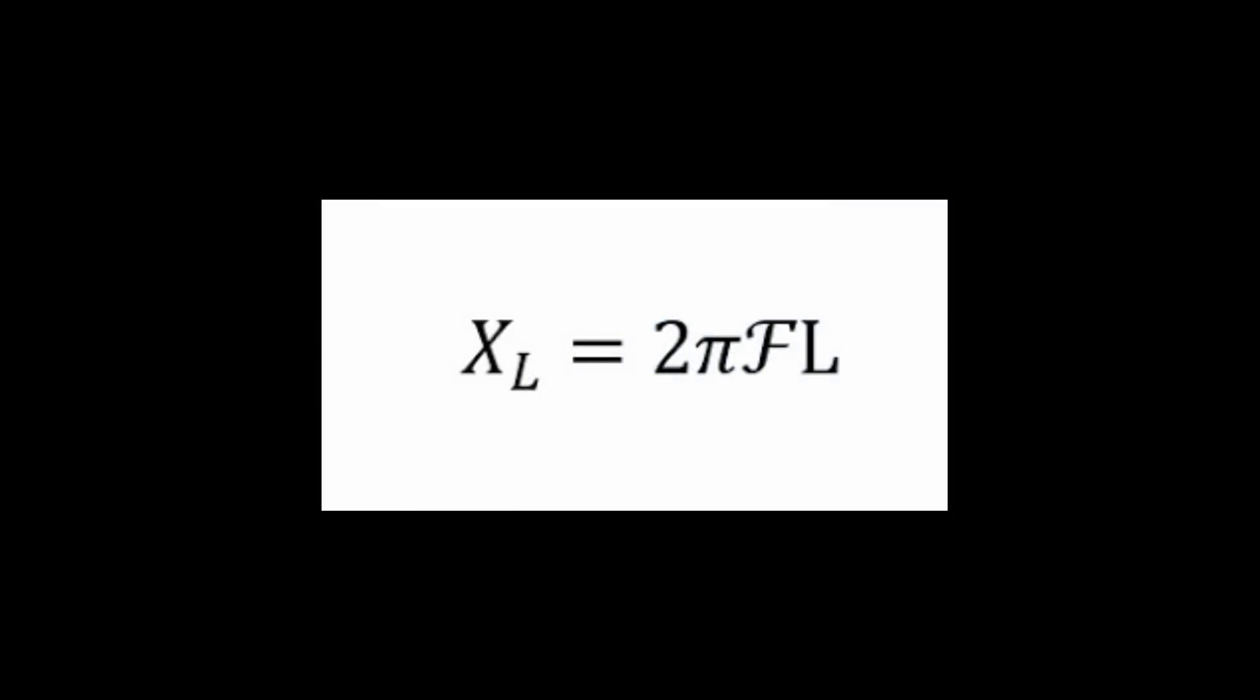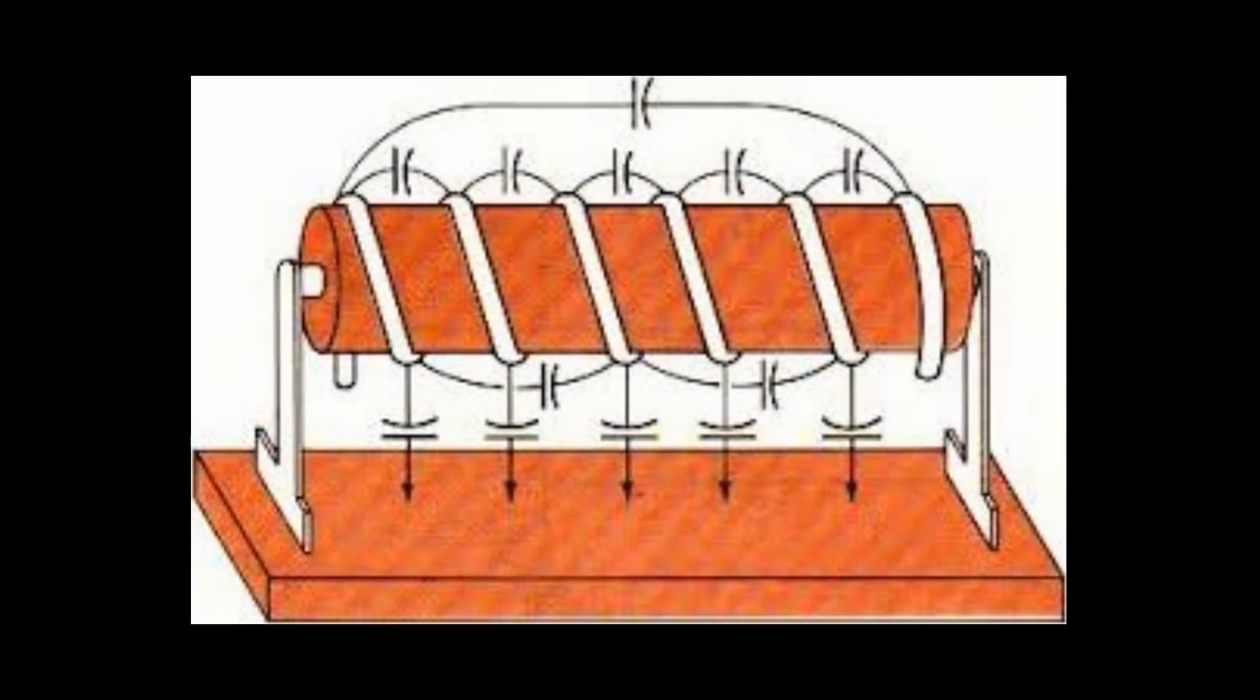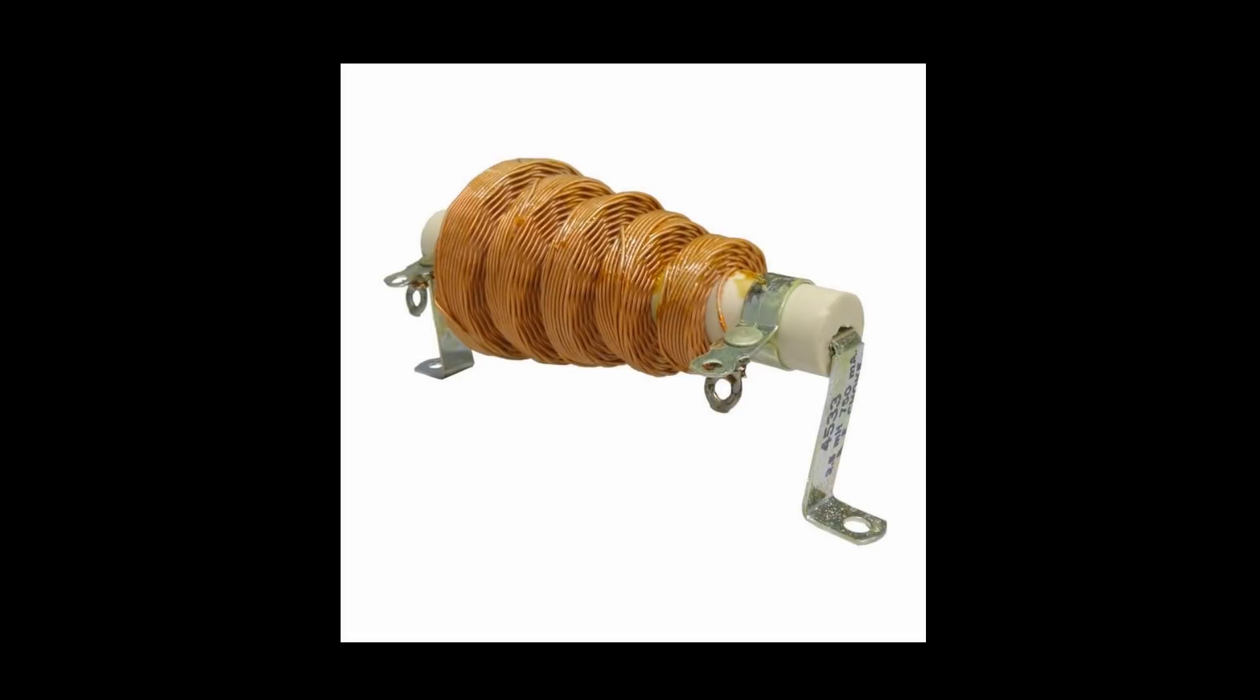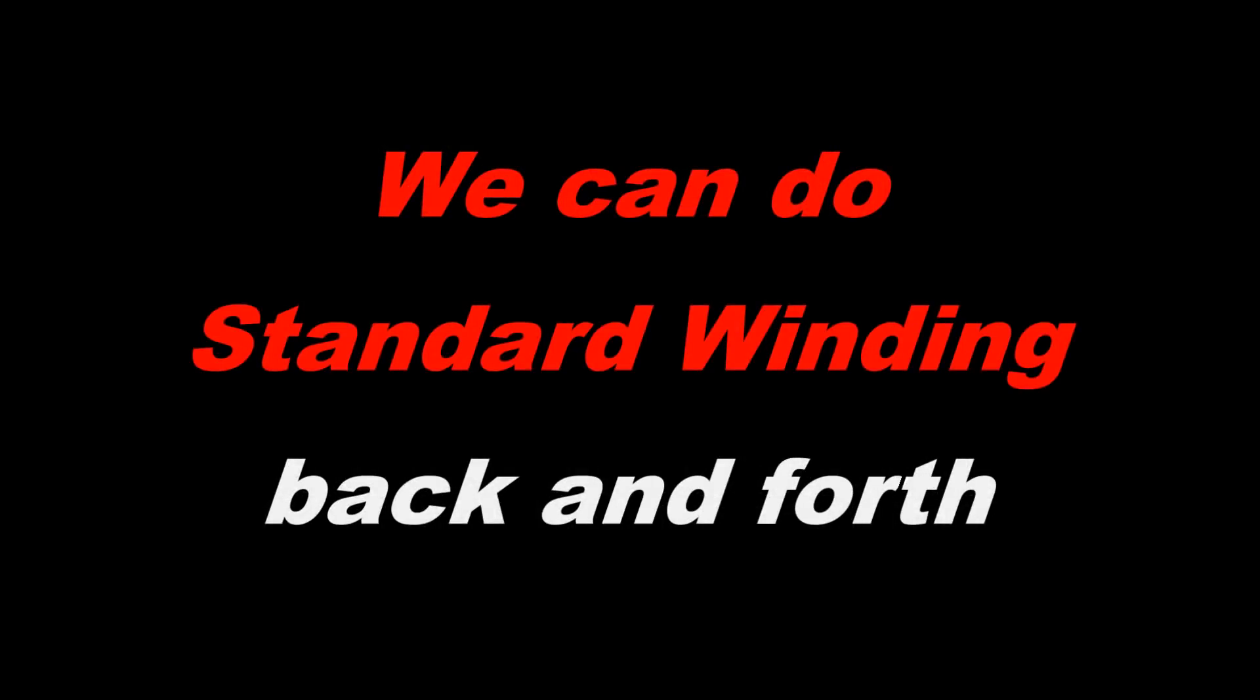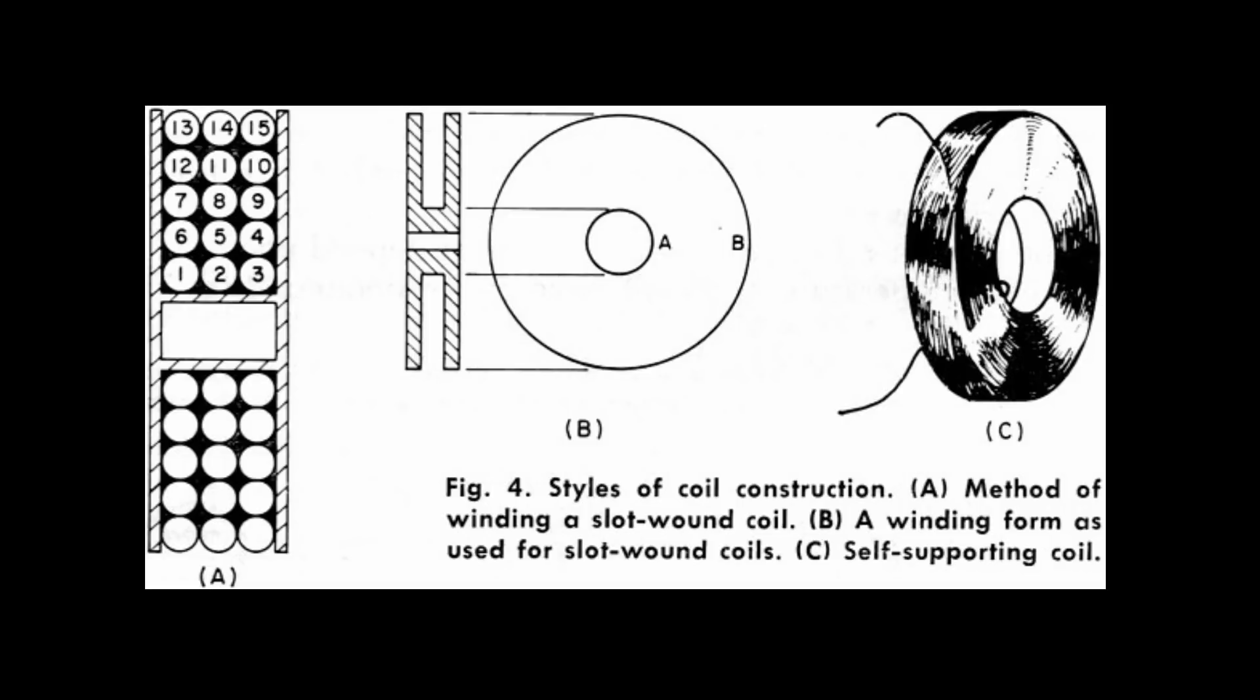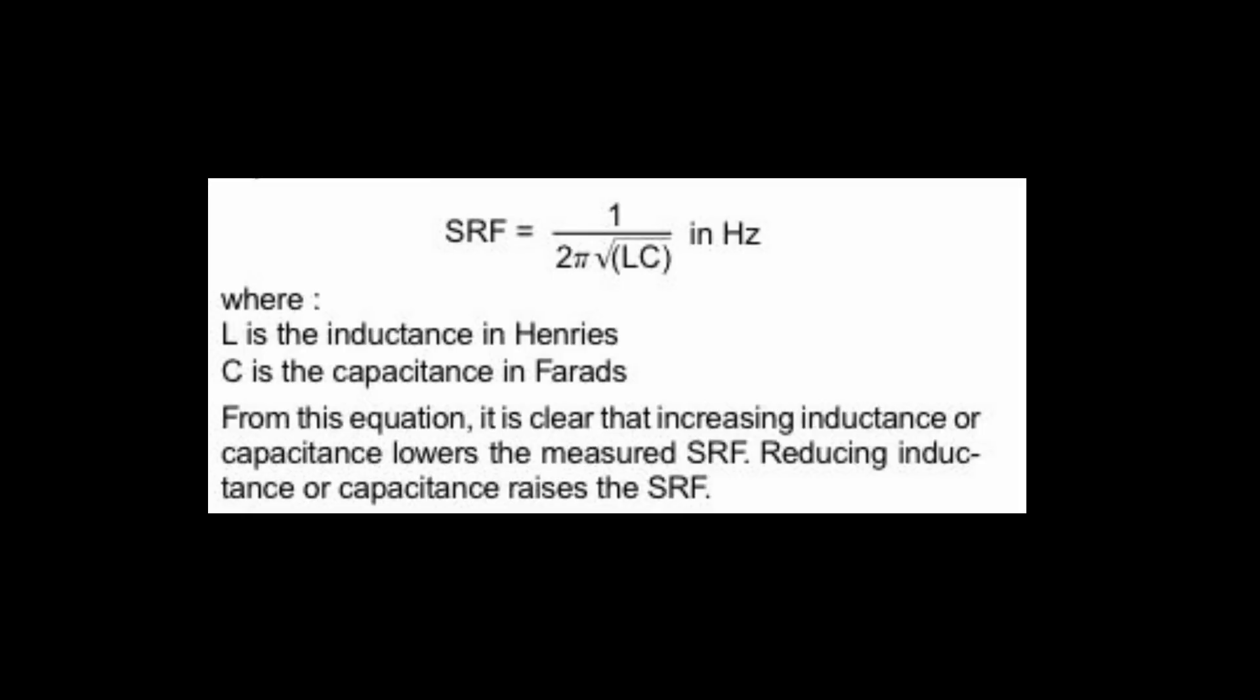Chokes act like ordinary inductors below their self-resonant frequency or SRF. That is, their impedance is defined by the inductive reactance formula. The SRF is caused by the choke's inductance interacting with the various capacitances between the windings and layers in the coil, thus forming a tuned circuit. You might have seen some of the fancy winds that reduce the capacitance between the turns. We can't really do that in our homemade chokes. At best, we usually do a single layer solenoid or a back and forth type solenoid. Occasionally, you'll see some people doing some scramble winds or some fancy winding.